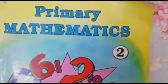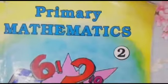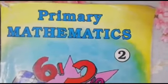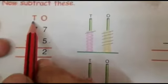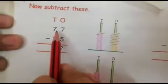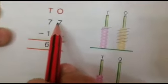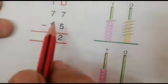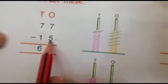Good morning students. Take out your maths book. Today we will do page number 40. Now subtract these. T for 10s and O for 1s. We have to subtract 77 minus 15.